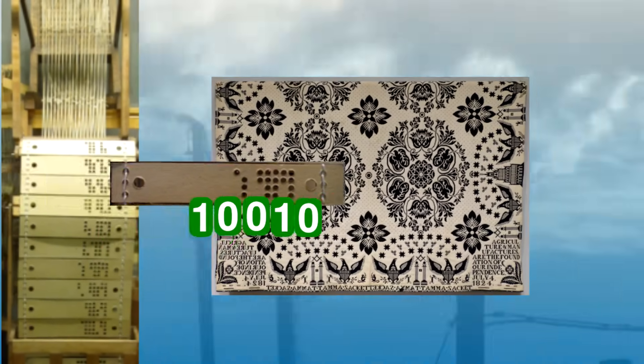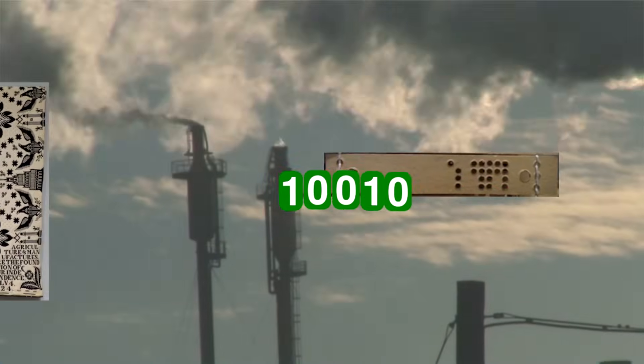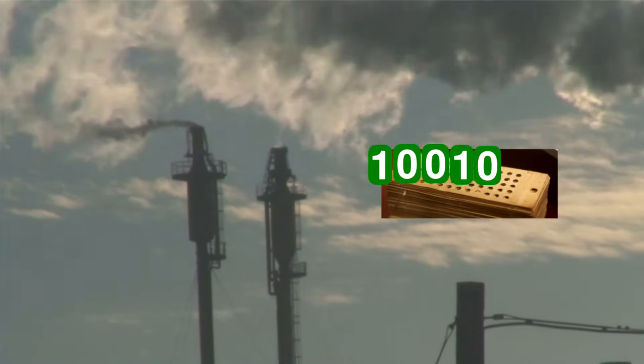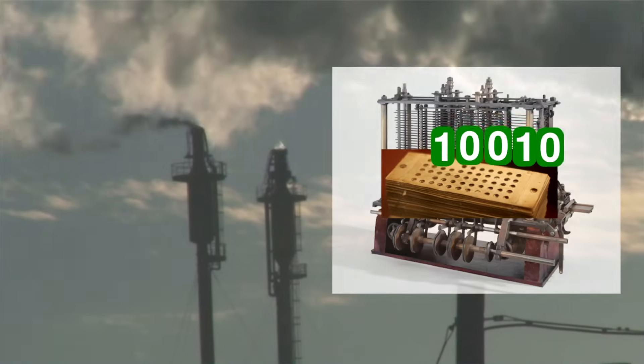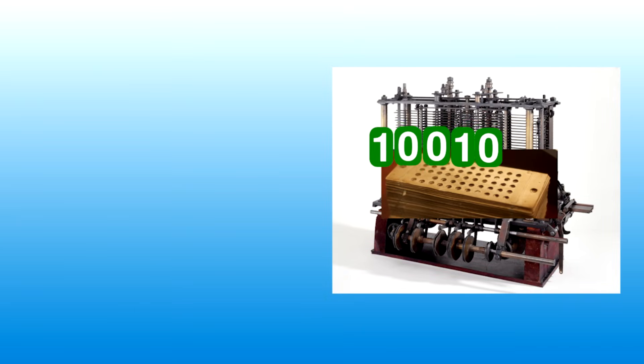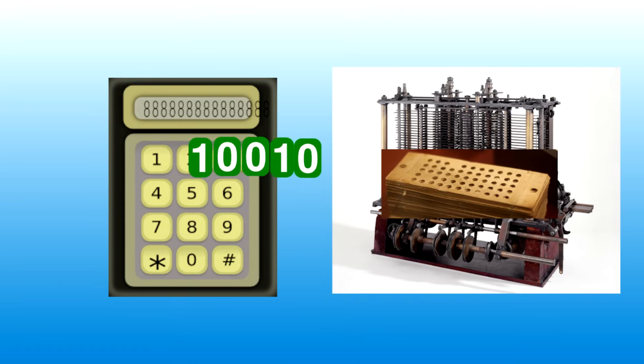And this idea of there being recorded information read by a machine was quickly borrowed to be applied to mathematical computation. Charles Babbage invented the analytical engine in 1837, and it was basically a calculating machine.